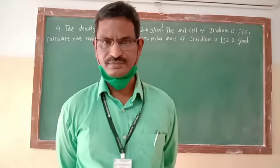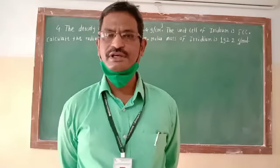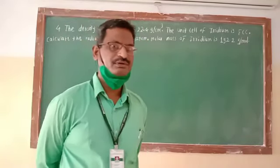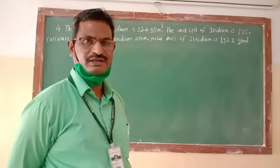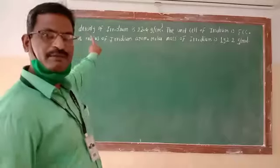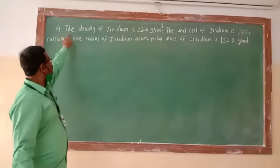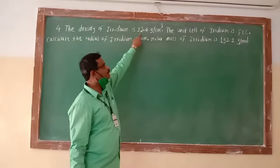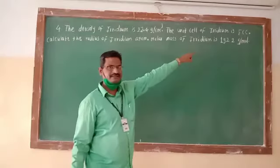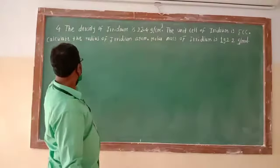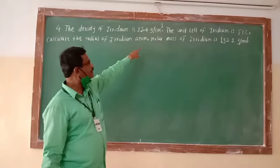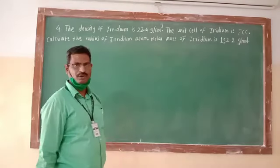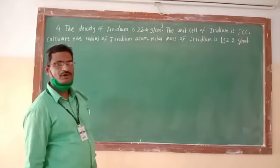Let us continue with certain numerical examples. Problem number four: the density of iridium is 22.4 gram per centimeter cube. The unit cell of iridium is FCC (face-centered cubic). Calculate the radius of iridium atom, given molar mass of iridium is 192.2 gram per mole.